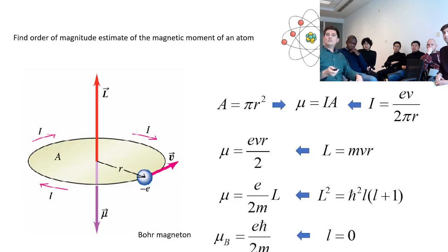Now let's think about what the magnetic moment of something like an atom would be. We can just plug in things like the area of this electron that's going around, and the current would be the electronic charge multiplied by the velocity.